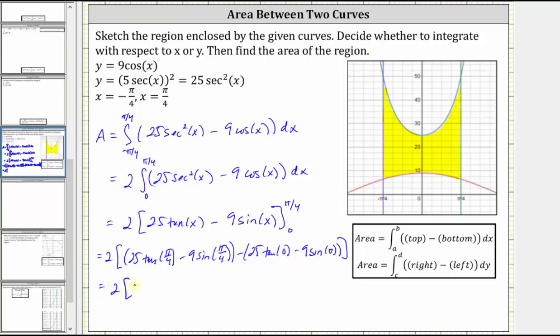So we have 2 times tangent π over 4 is equal to 1, which gives us 25 times 1. Sine π over 4 is equal to square root 2 divided by 2. So we have minus 9 times square root 2 divided by 2. Then we have minus tangent zero is equal to zero. And sine zero is also equal to zero, so we just have minus zero.